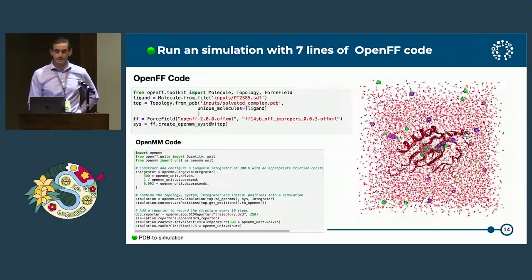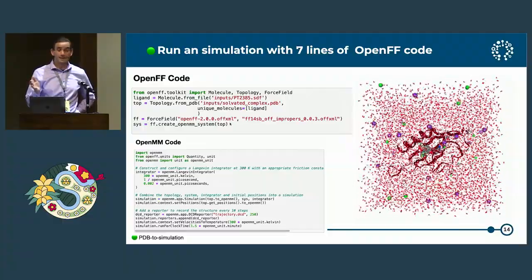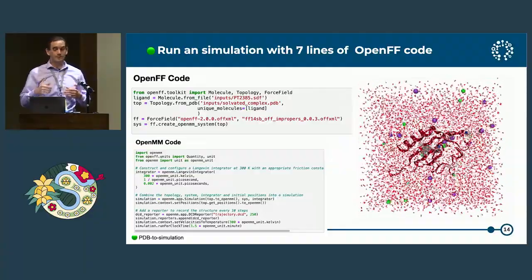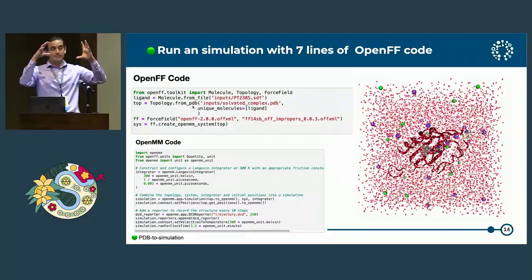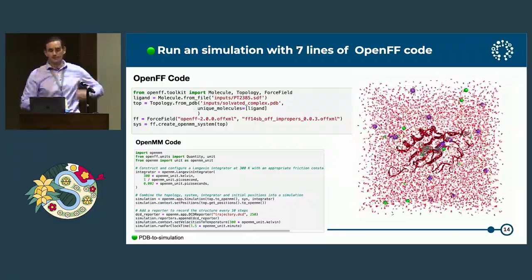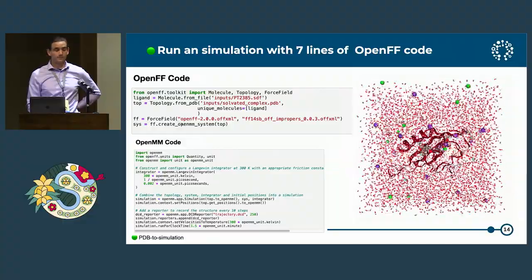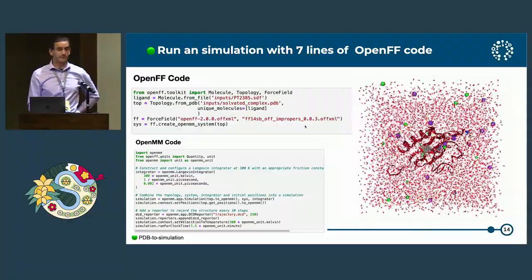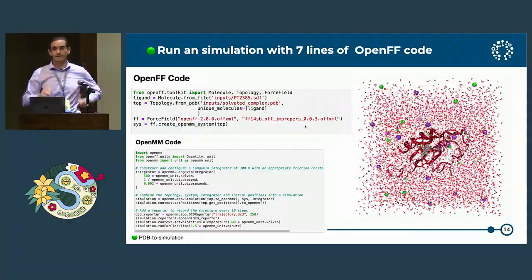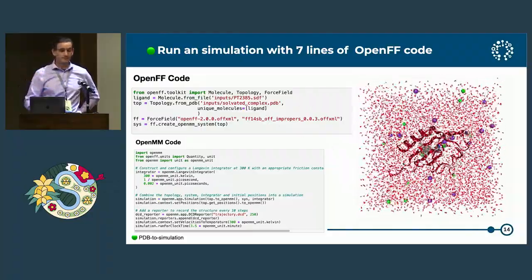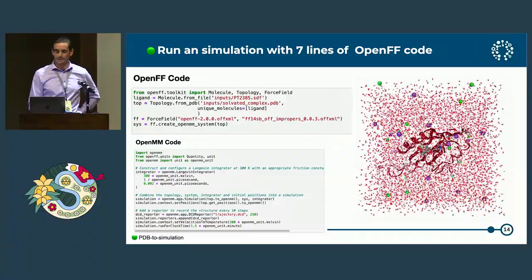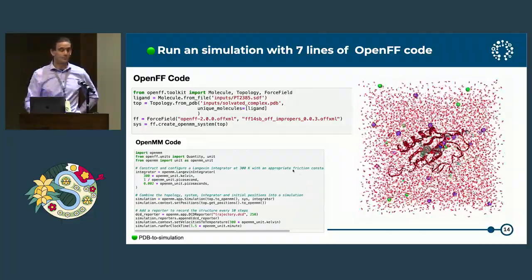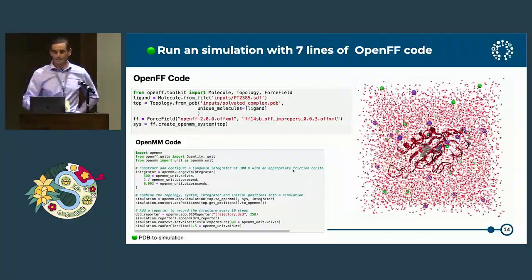Next, we construct a force field object. We have a special force field format that lets you append force fields to each other in a hierarchy — terms from the first force field can be overridden by terms from the second. In this case, we load first our small molecule force field, which knows how to parametrize water, ions, and the small molecule ligand, and then we load the protein force field, which recognizes complete amino acids. The protein force field applies to the protein, the red wiggly ribbon, and Sage applies to everything else, and we get our simulation. This takes all of seven lines of OpenFF code, and then it's all OpenMM boilerplate to set up the thermostat, reporters, and everything.